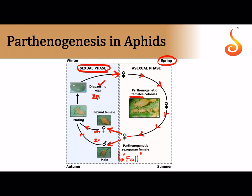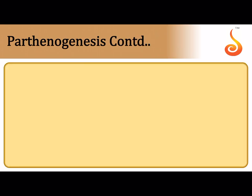The diapausing egg contains an embryo that does not develop throughout winter; only at the onset of spring does the egg hatch into females capable of parthenogenesis. Half the life cycle involves the sexual phase and half the parthenogenetic phase — that is why it is called incomplete or cyclic parthenogenesis, not obligatory, but a type of facultative parthenogenesis.